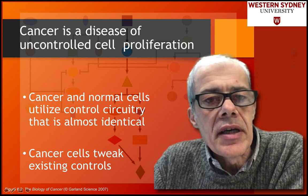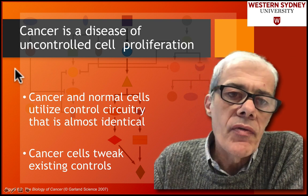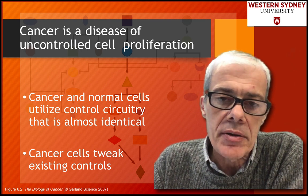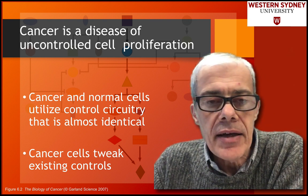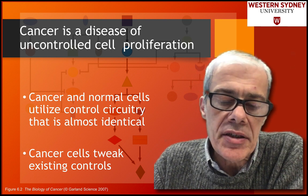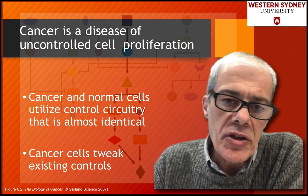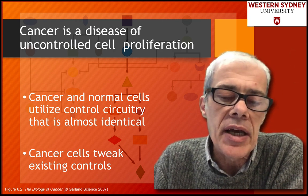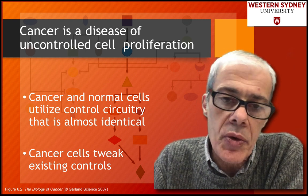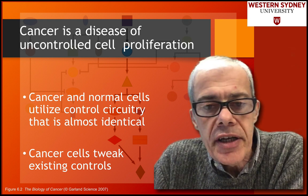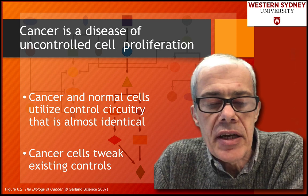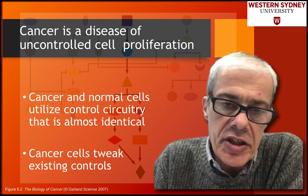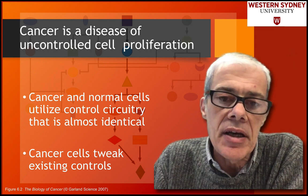We're going to look at how these signaling pathways can be disrupted and can lead to uncontrolled cell growth and proliferation. Cancer can be thought of as a disease of uncontrolled cell proliferation — cells that are growing at a faster rate than their neighboring cells. In previous lectures, we've discussed the multi-hit hypothesis: multiple genetic changes within a cell or colony of cells that give those cells a growth advantage.